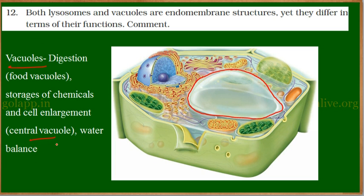Central vacuoles are found in plant cells and perform a key function — they help in maintaining water balance and provide turgidity, which is stiffness, to the plant cell. Excess water is stored in the vacuoles, which gives a particular shape to the plant cell. The turgidity of the plant cell is due to the vacuoles maintaining the water balance.